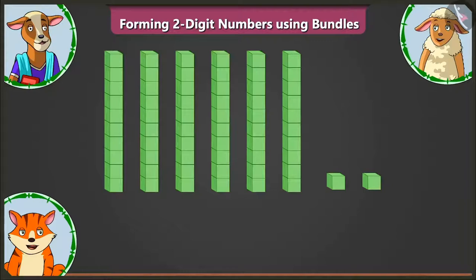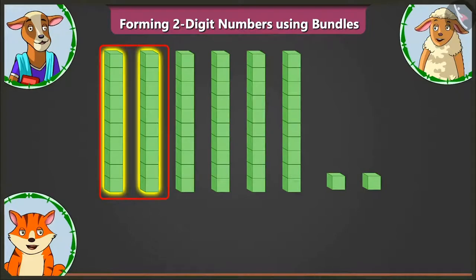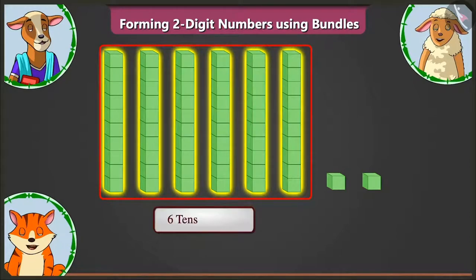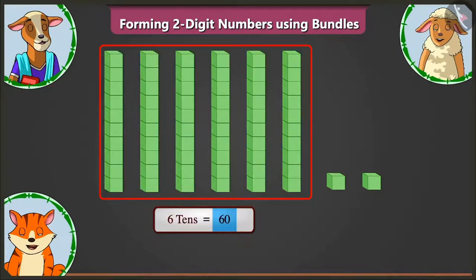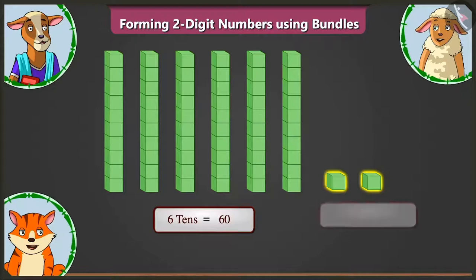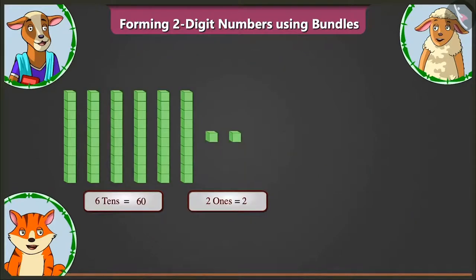Well done, Billy. Similarly, there are one, two, three, four, five and six groups of ten blocks each. So, six tens makes sixty. Now, there are two small blocks which means there are two ones. Very good.